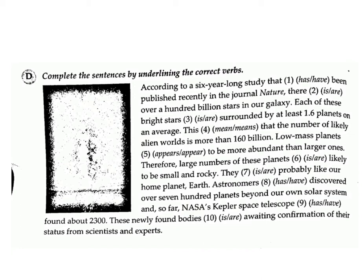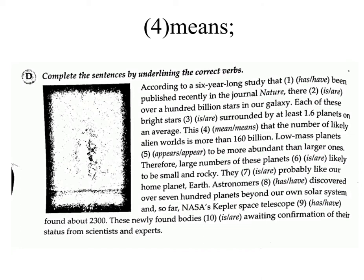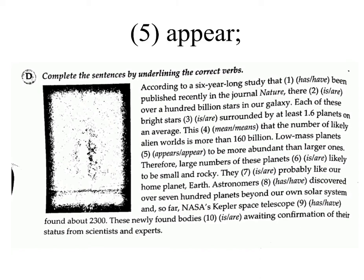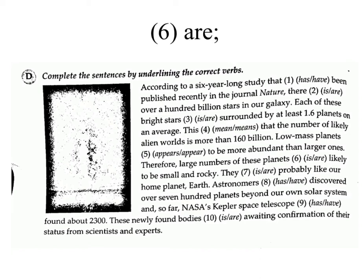...surrounded by at least 1.6 planets on average. This (4) means/mean that the number of likely alien worlds is more than 160 billion. Low mass planets (5) appears/appear to be more abundant than larger ones. Therefore, large numbers of these planets (6) is/are likely to be small and rocky. They (7) is/are probably like our home planet, Earth. Answer: means. Answer: appear. Answer: are. Answer: are.